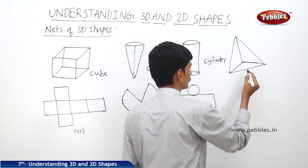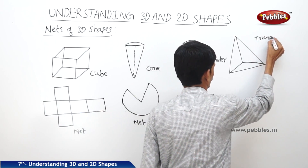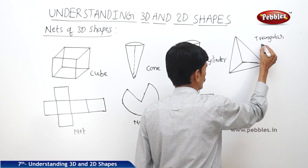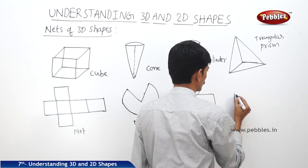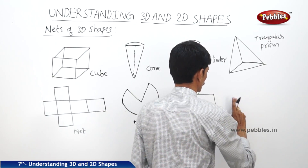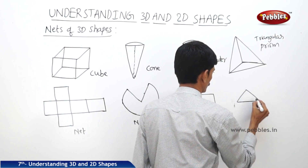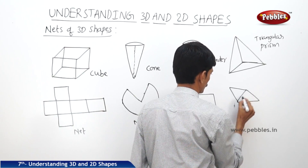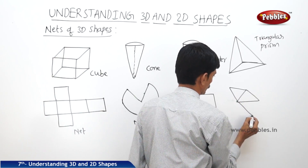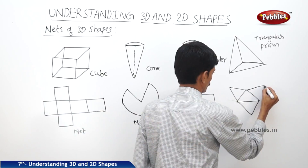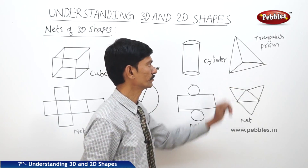And if you take a triangular prism — this is a triangular prism — when unfolded, we get its net. This is the net of the triangular prism. Thank you.